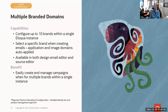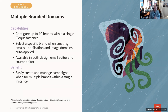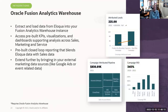Multi-branded domains have also been introduced, allowing up to 10 brands to be configured within a single Eloqua instance. When creating emails, you can select which brand to use, and the application and image domains are automatically applied to the email and its links. This makes it easy to manage campaigns for multiple brands in a single instance. It does require premium branding and configuration, so reach out if you're managing multiple brands and want to get started.